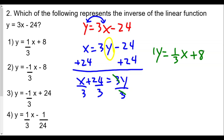Taking 24 divided by 3 gives us 8. So the inverse of y equals 3x minus 24 is y equals one-third x plus 8. You don't just flip numbers or switch things around — you must switch x and y, then solve for y. The answer is choice one.